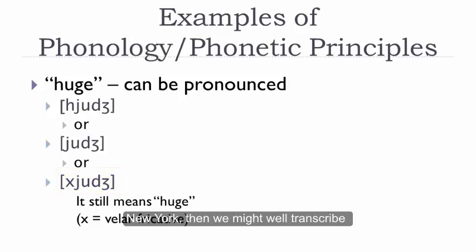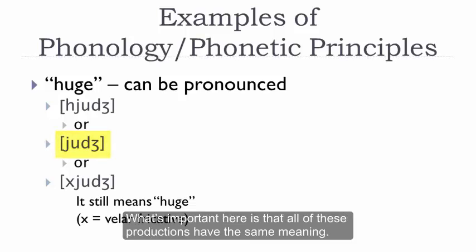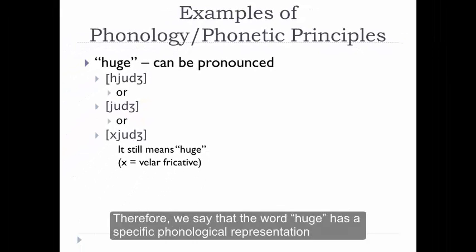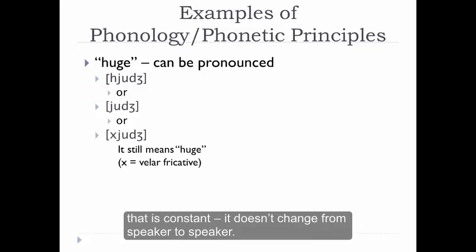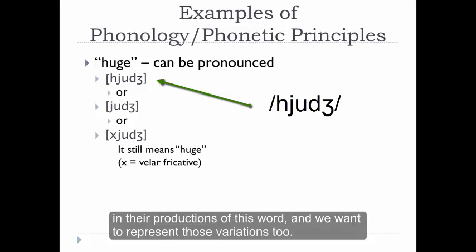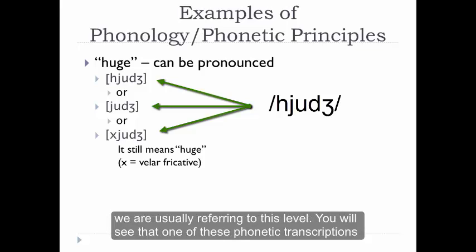So when we transcribe the standard production of 'huge,' we'll transcribe it one way. When we transcribe the emphatic production, we'll want to represent the velar fricative because that's what the speaker produced. And if we're in New York, we might transcribe some speakers' productions yet another way. What's important is that all of these productions have the same meaning — therefore, the word 'huge' has a specific phonological representation that's constant. Those variations occur at the phonetic level, and when we refer to phonetic transcription, we're usually referring to this level.